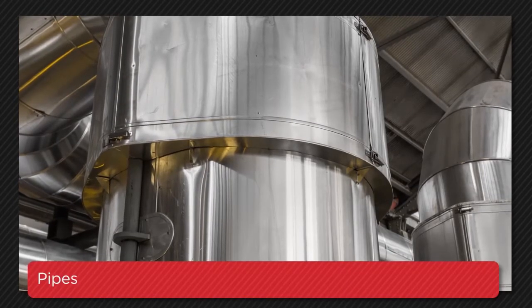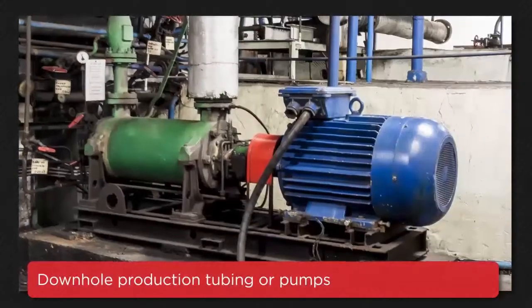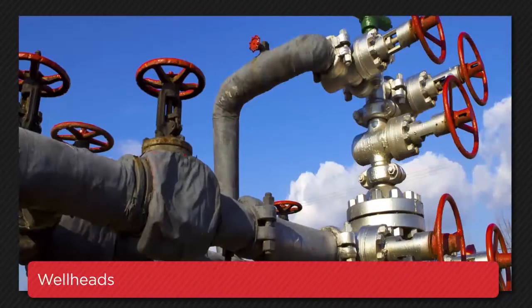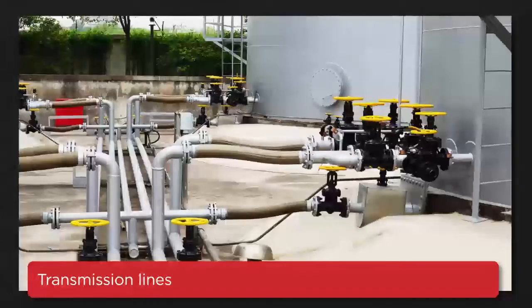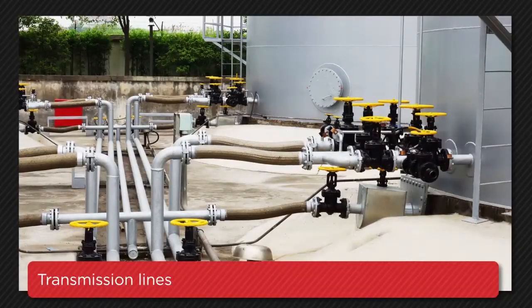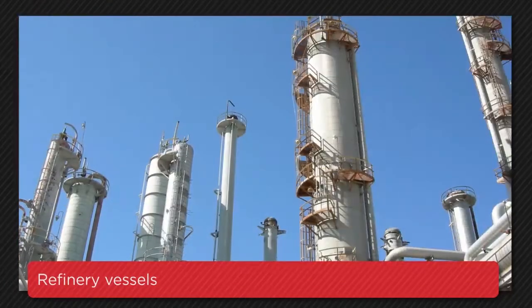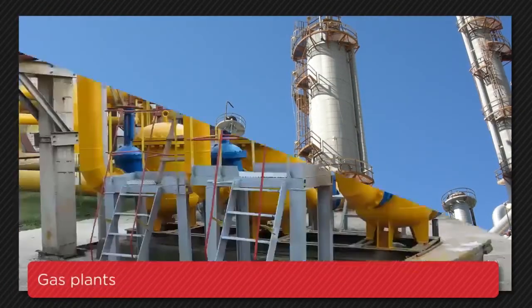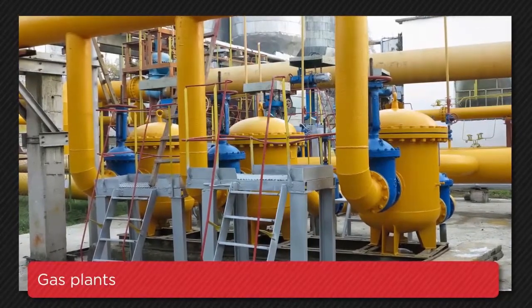NORM accumulation occurs in pipes, vessels, downhole production tubing or pumps, wellheads, transmission lines especially where flows are affected by chokes, valves, elbows, or filters, refinery vessels, or gas plants, especially when propane and ethane are involved.